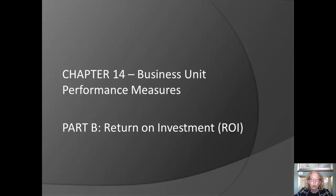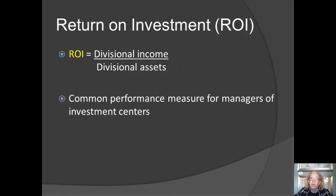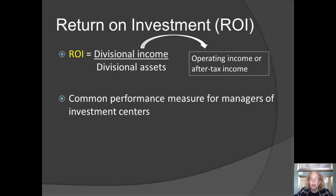In this section, we will be talking about ROI — return on investment. The formula for ROI is some measure of divisional income divided by some measure of divisional assets. Divisional income could be measured as operating income, or, if the firm would prefer, it can use after-tax income.